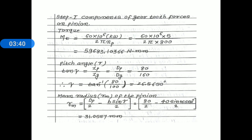Step one — components of gear tooth forces on the pinion. We need torque, pitch angle, and mean radius of the pinion. First, calculate the torque. M sub xt equals 16 times 10 to the power 6 times kilowatt divided by 2 pi times n sub xp. Substituting values: 16 times 10^6 times 5 divided by 2 pi times 800. After simplification, torque M sub xt equals 59,683.10366 newton-millimeters.